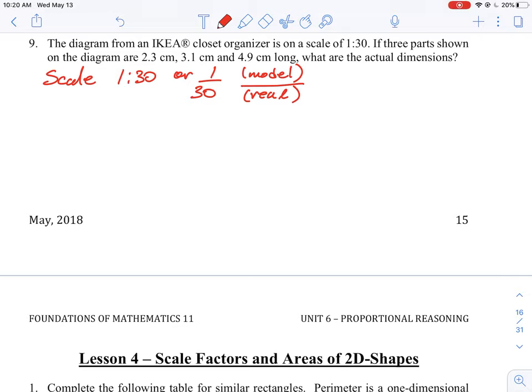So if three parts shown on the diagram are 2.3 centimeters, 3.1, and 4.9, what are the actual dimensions? So this is implying a couple of things.